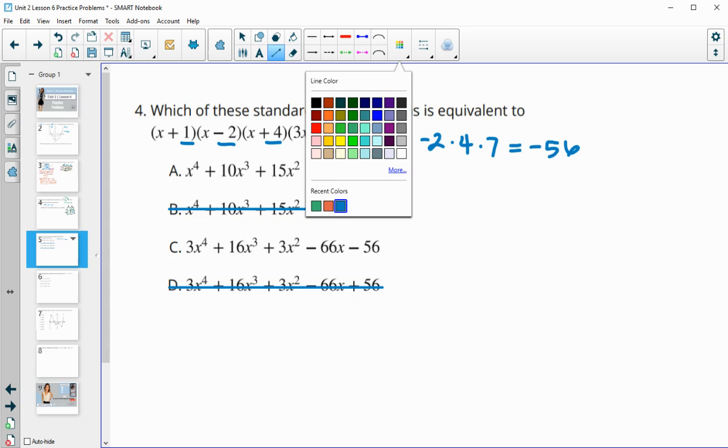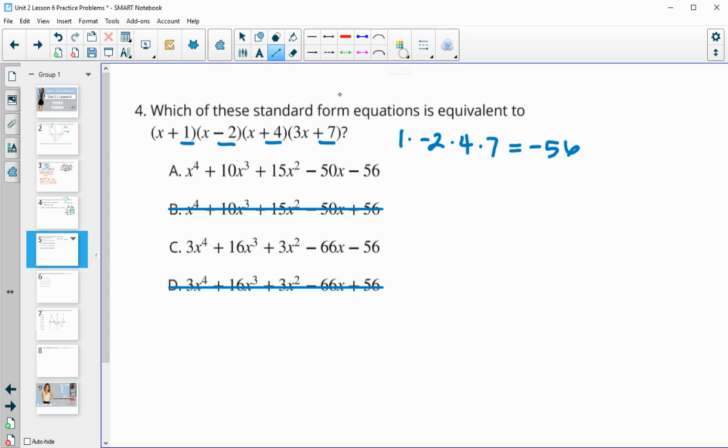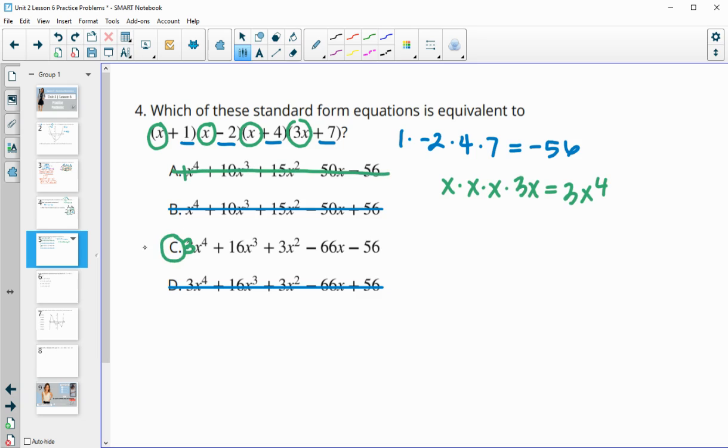So now let's take a look at the leading coefficient. In this case, it's a 1. And in this case, it's a 3. So now we just need to look at if we multiply together all of these first terms, what will that give us? We're doing x times x times x times 3x. So that's going to be 3x to the fourth. So that rules out a. And we're left with c. So we didn't need to actually multiply everything out to figure this one out.